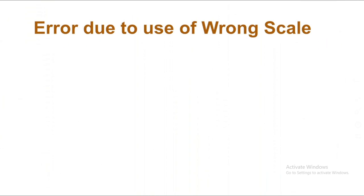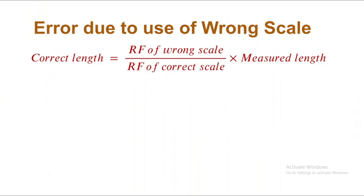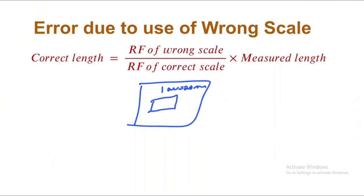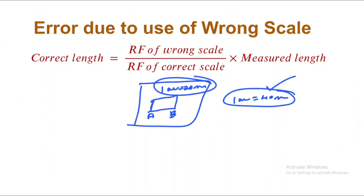Error due to use of wrong scale: if we already have a plan drawn at 1 cm equal to 20 meters but it should be 1 cm equal to 40 meters, we need to find the correct length. The representative fraction for the wrong scale is 1 divided by 40 divided by 100, giving 1/4000. For the correct scale of 20 meters it is 1/2000. The correct length can be calculated from the ratio of wrong scale to right scale, and similarly the correct area.